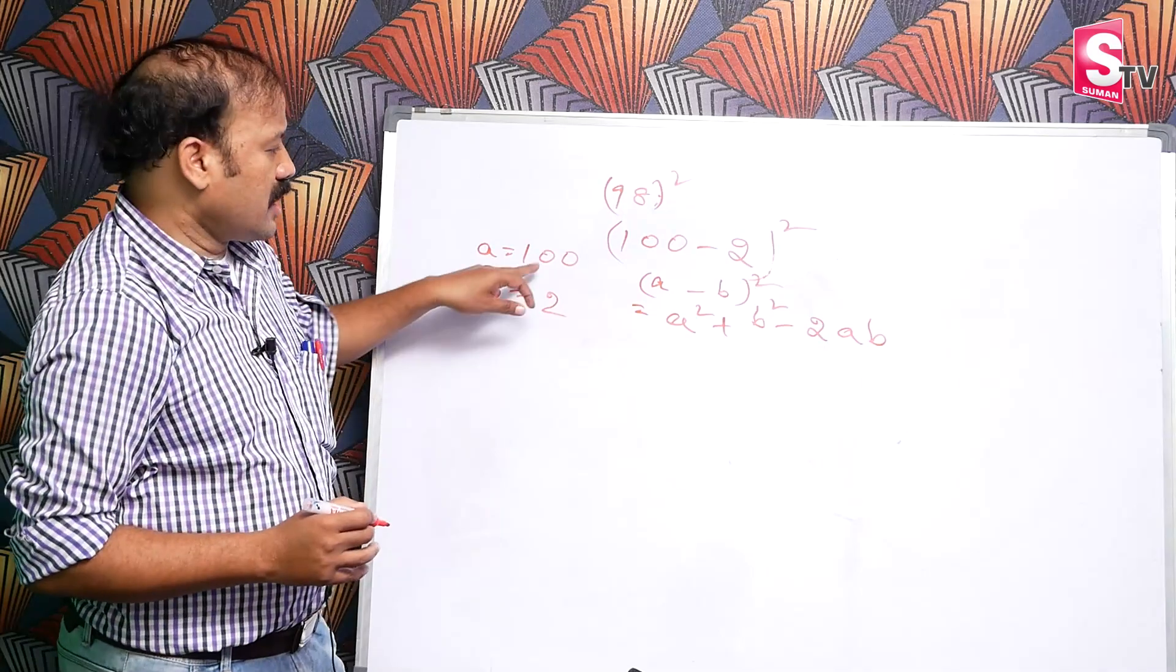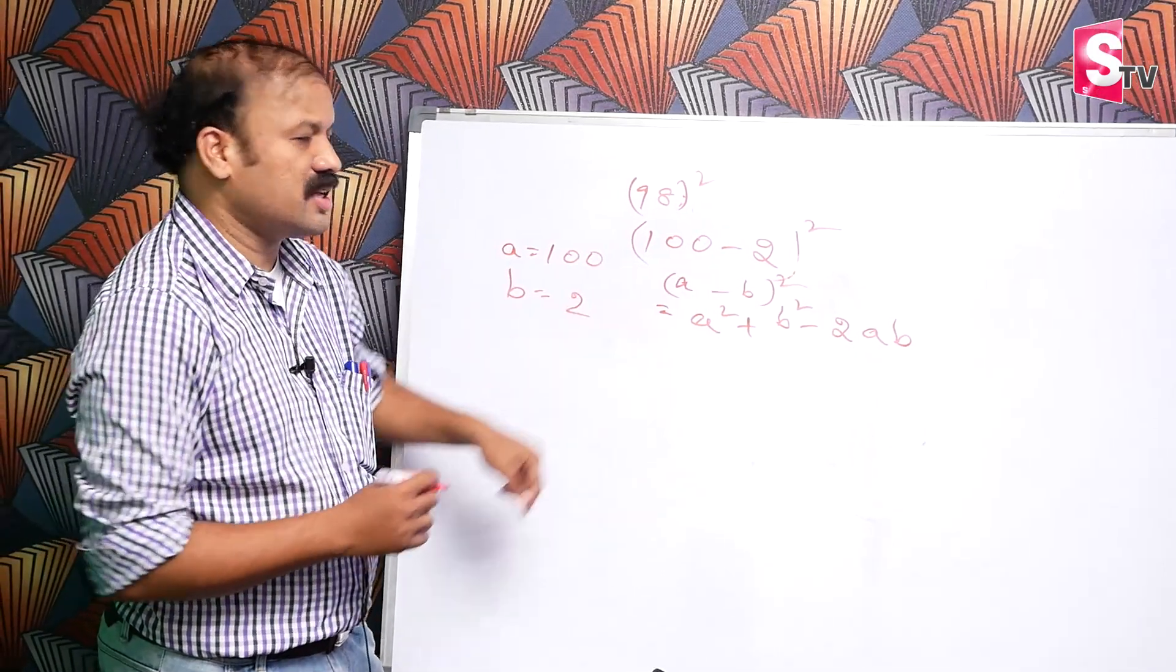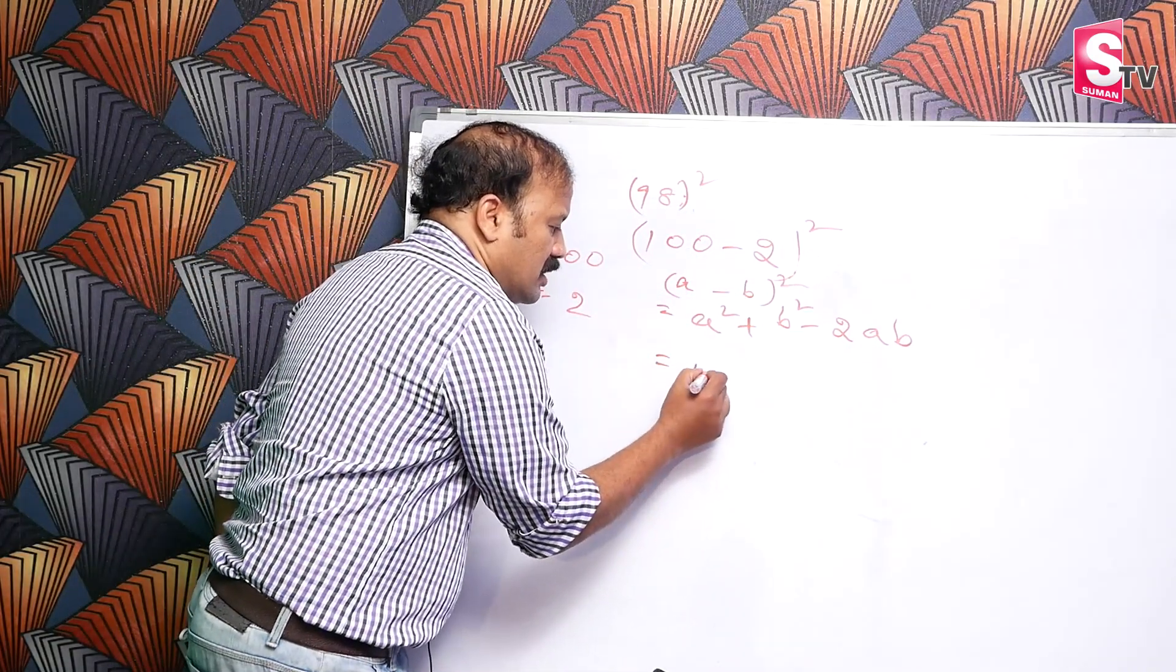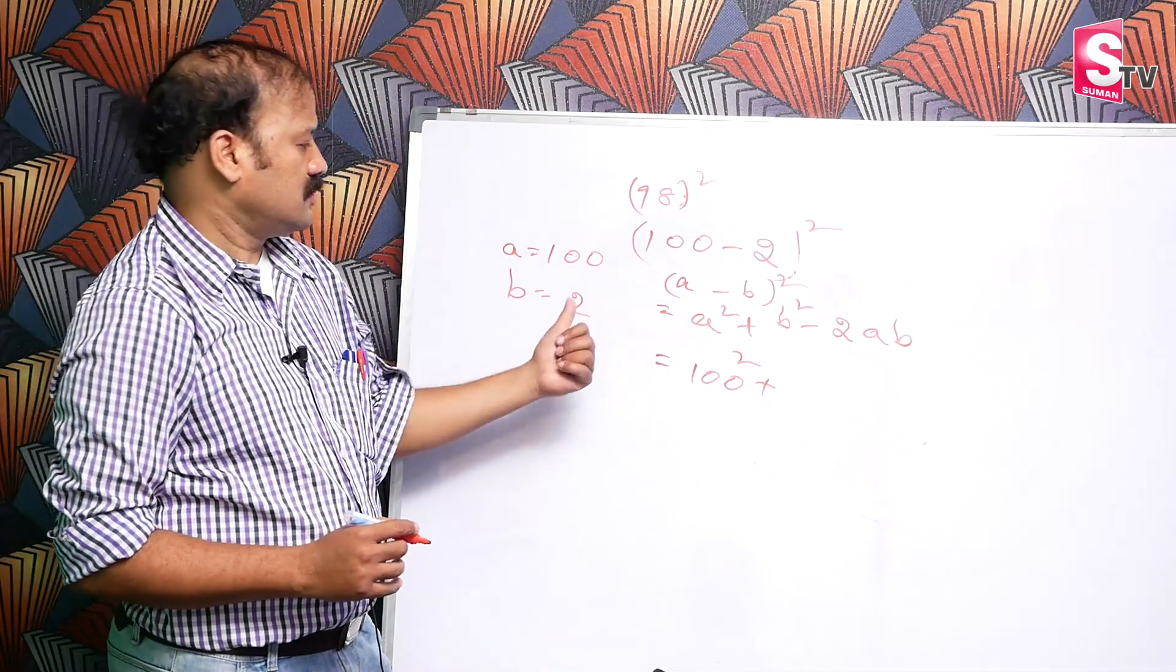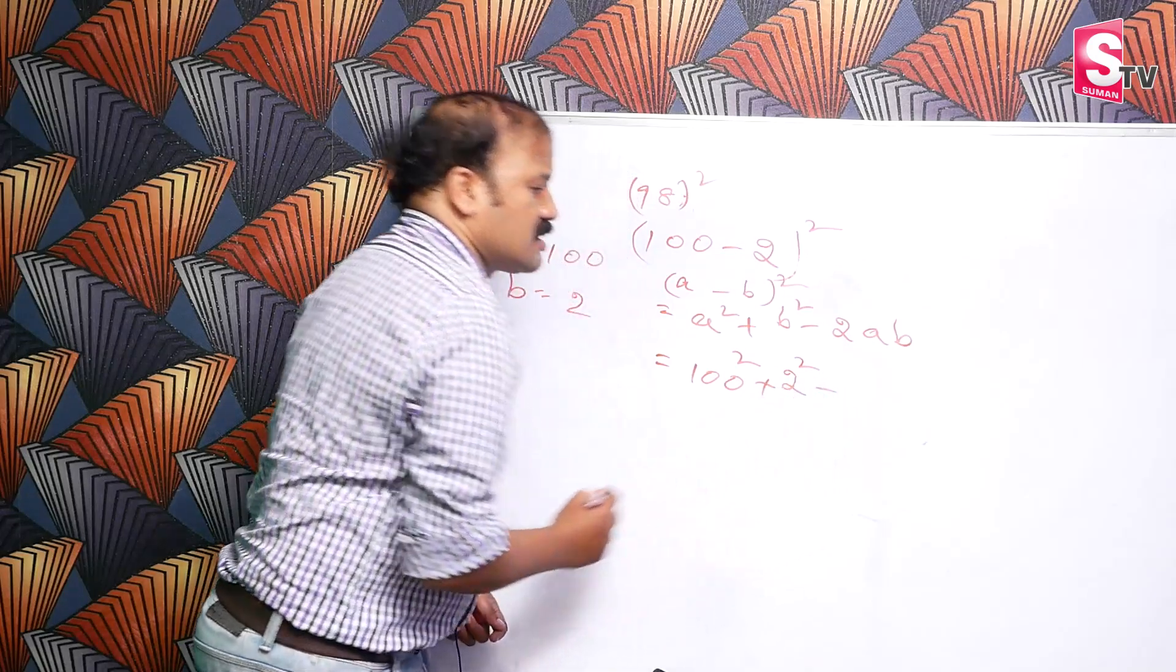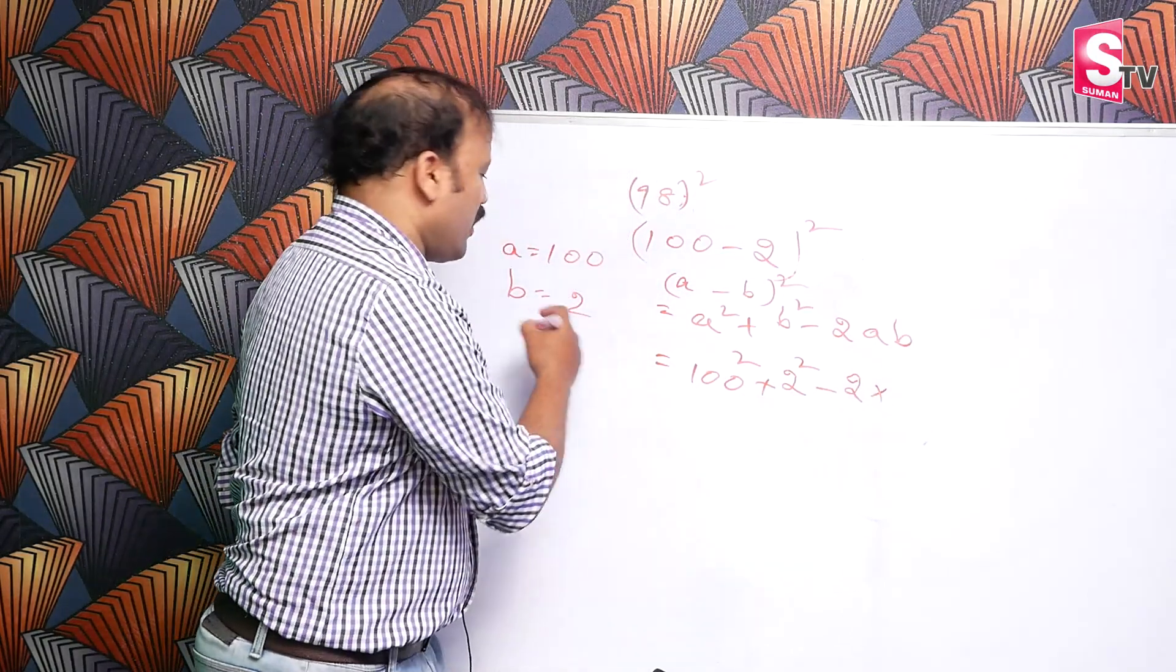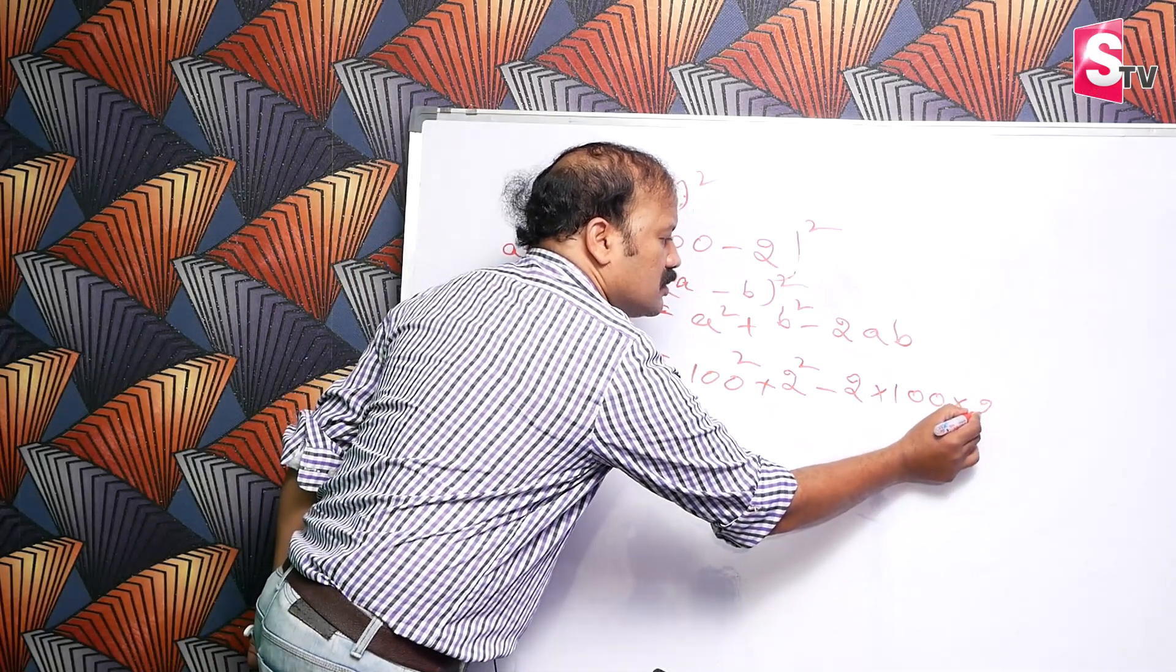Substitute the values in that formula. 100 square plus b square—the 2 square—minus 2ab: 2 into a value 100, b value 2.